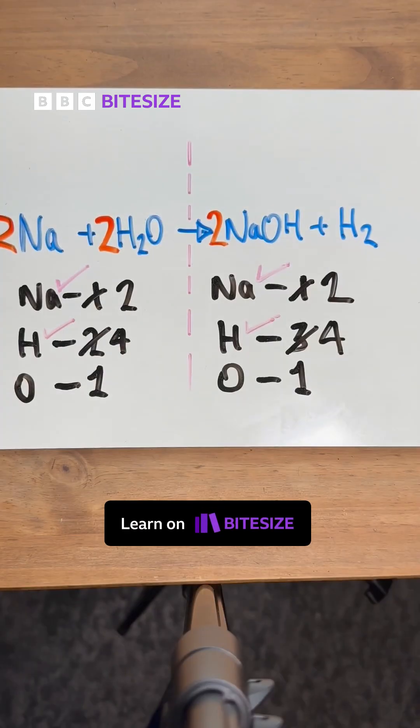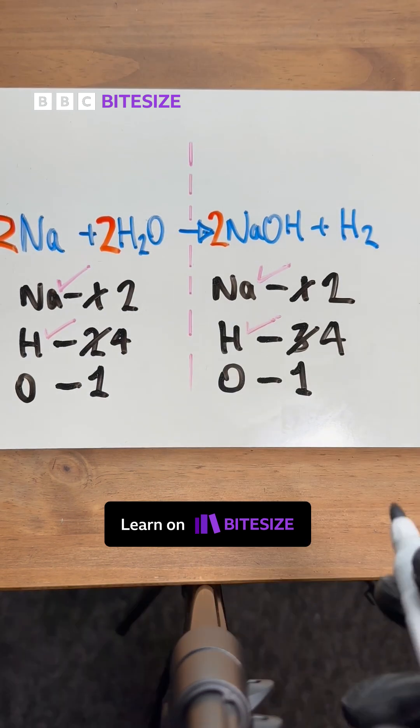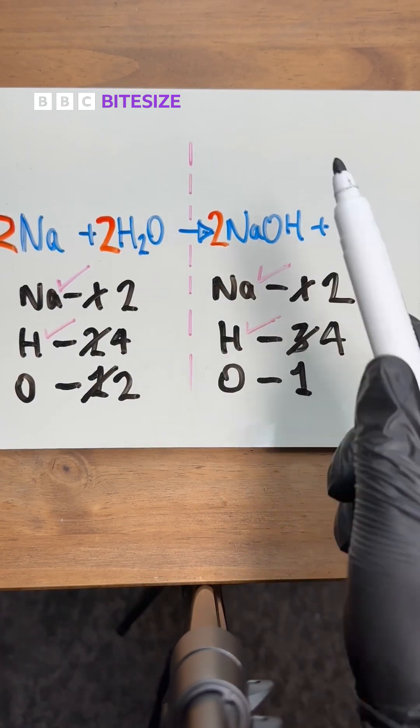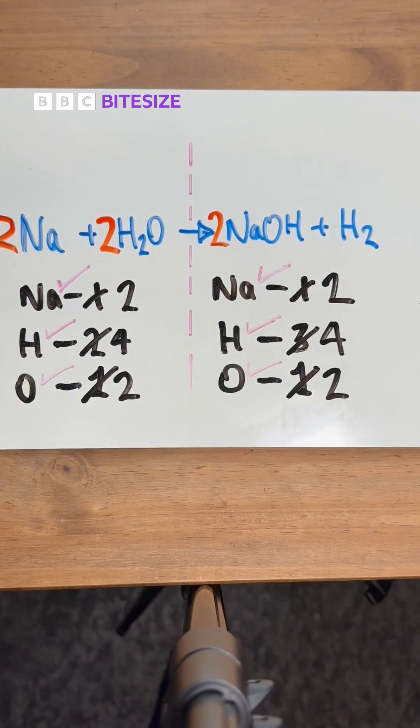All that's left is oxygen. Now because I put a two in front of the H2O, that means that oxygen has now changed to two. And also I put a two in front of the NaOH on the right as well, so that means that oxygen is two as well. So all of that is sorted now, you're done.